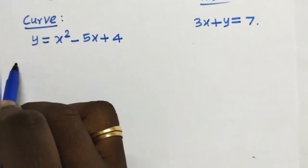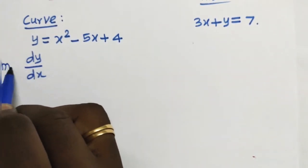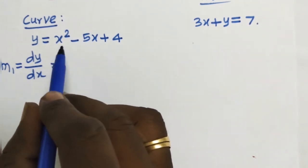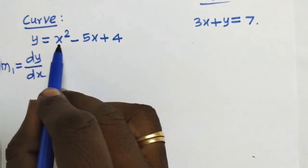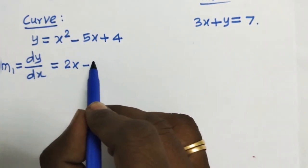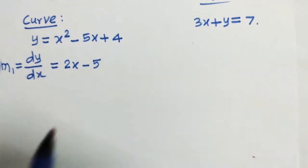Slope of the tangent dy divided by dx. Slope of the tangent m1, which is equal to dy divided by dx, which is equal to the function differentiated with respect to x. x square differentiate but not 2x minus differentiation of 5x is 5 plus differentiation of constant 4 is 0.